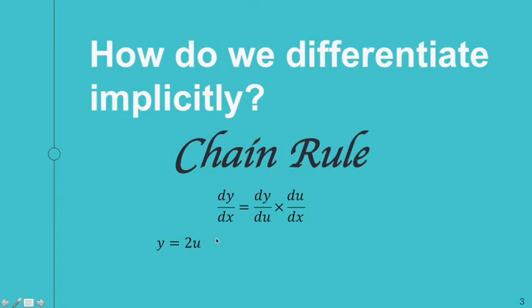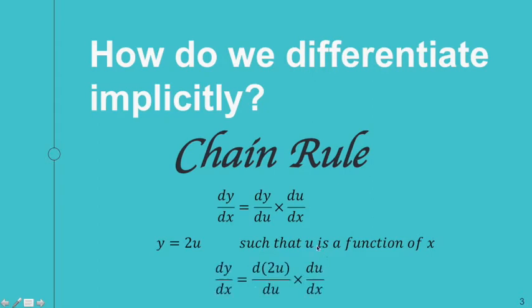We can use the chain rule if we assume that u is a function of x. Applying the chain rule, that's going to be dy/du — the derivative of 2u with respect to u — multiplied by the derivative of u with respect to x, which is du/dx. In the end, we get dy/dx because we can cancel out the du. We can simplify the derivative of 2u with respect to u since the variables are the same.